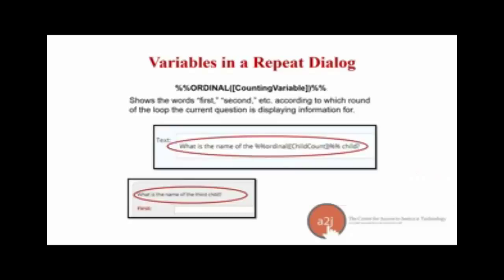Ordinals can be used similarly to calling out an instance. You can use the ordinal function — discussed last week — to call out just the current instance in the repeat loop, such as 'what is the name of the third child?' or 'what is your seventeenth asset?' using the ordinal function with your counting variable. The syntax is shown at the top of the screenshot.